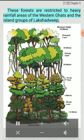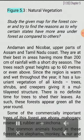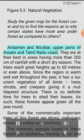Tropical Evergreen Forests: These forests are restricted to heavy rainfall areas of the Western Ghats and the island groups of Lakshadweep, Andaman and Nicobar, upper parts of Assam and the Tamil Nadu coast. They are at their best in areas having more than 200 centimeters of rainfall with a short dry season.